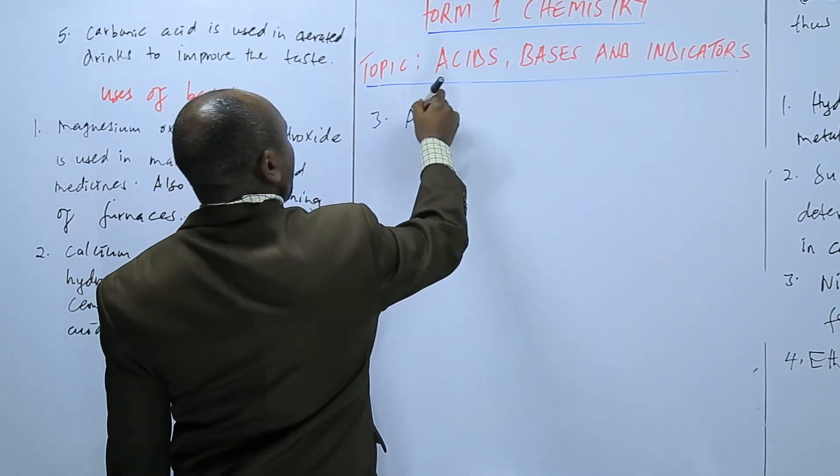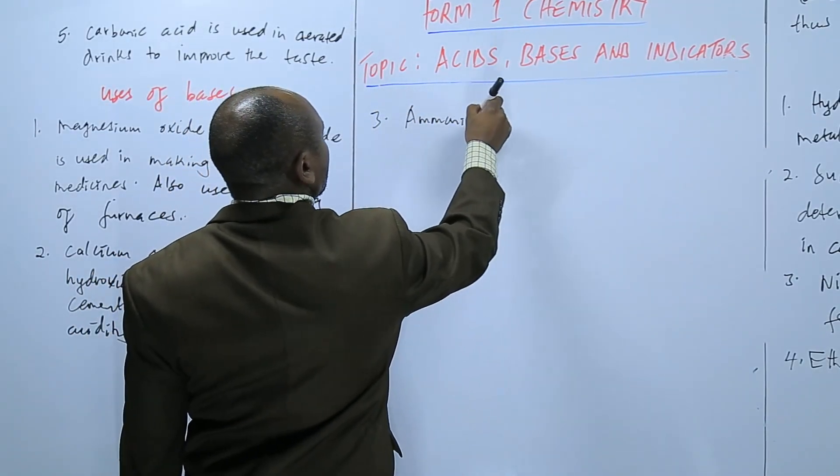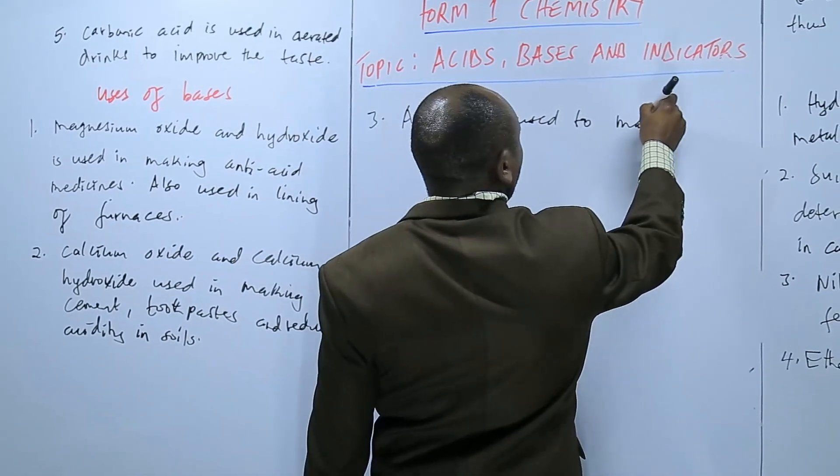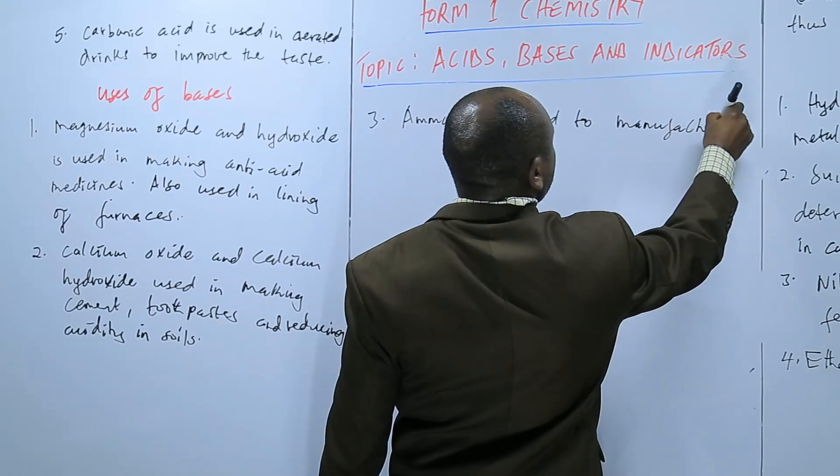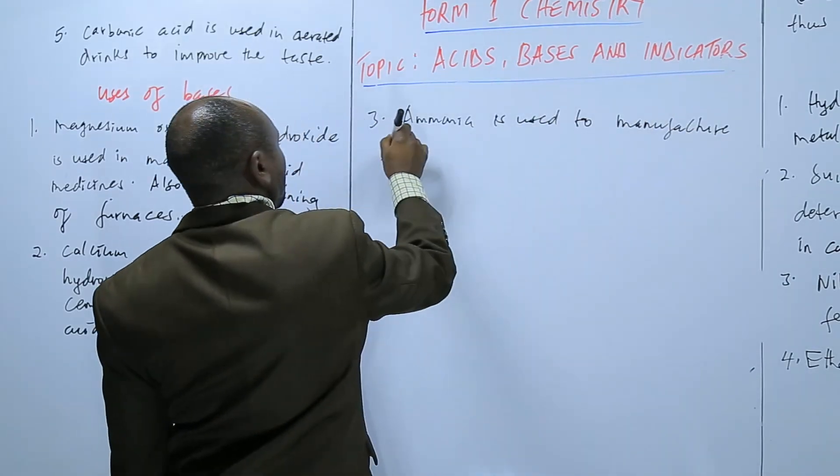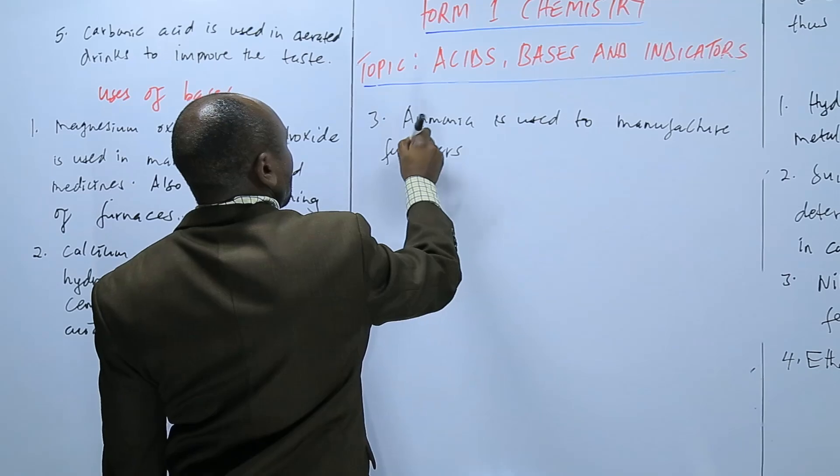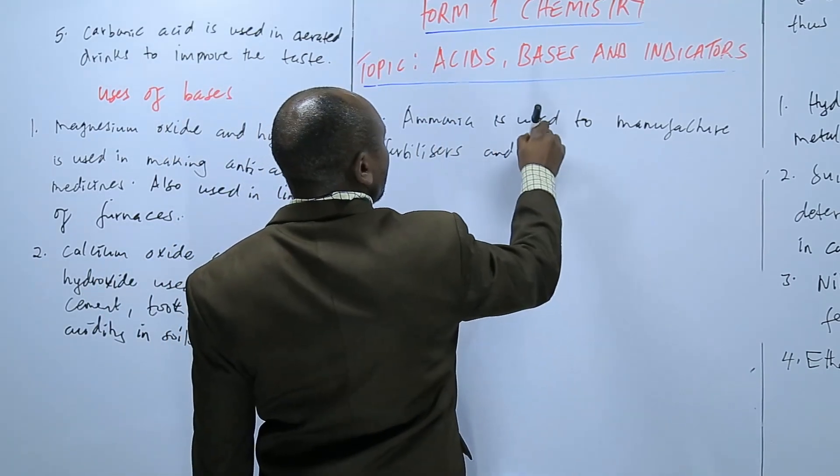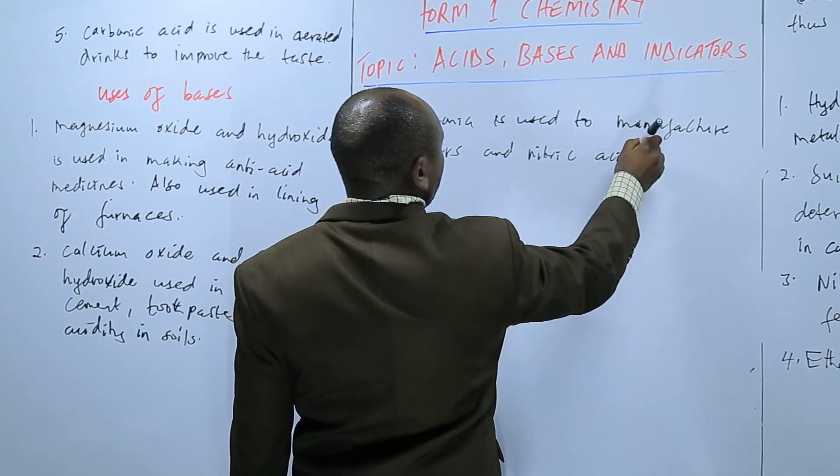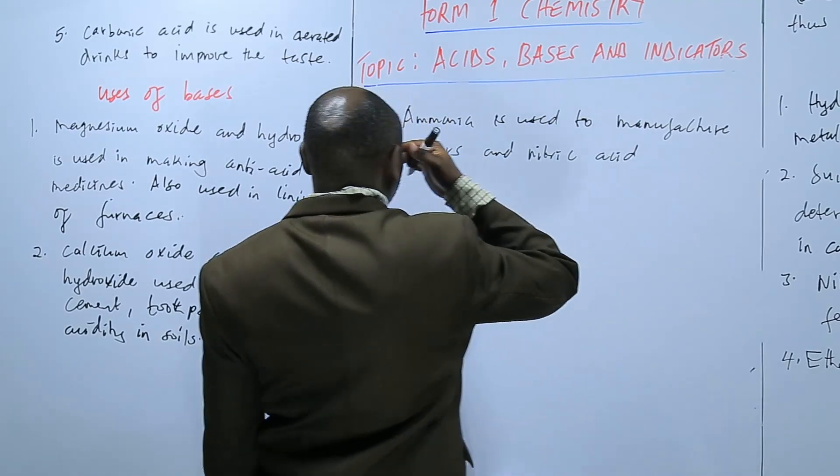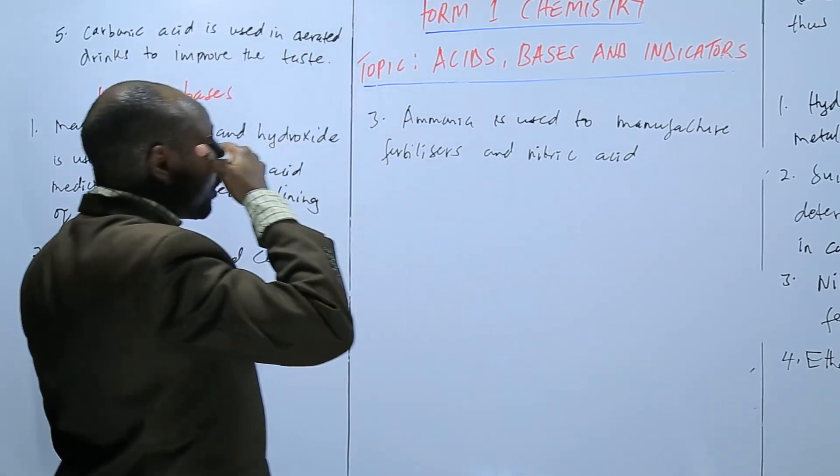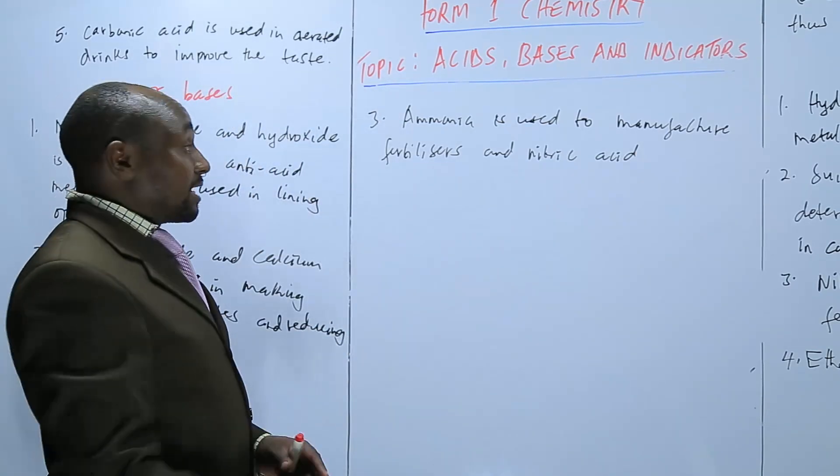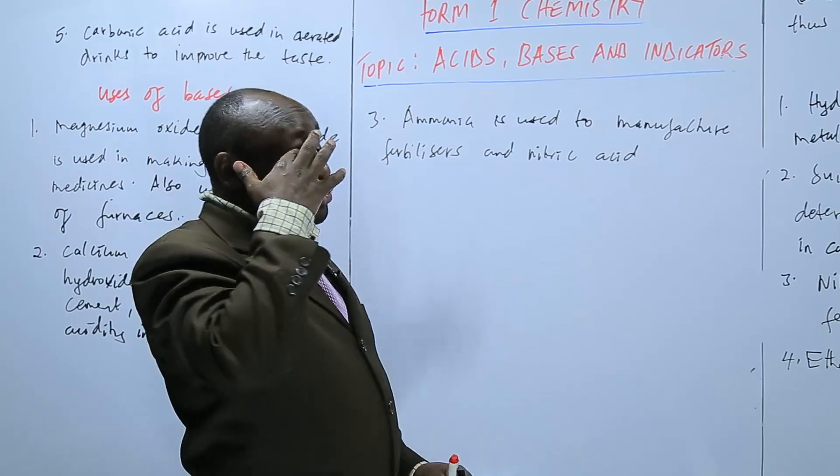We have another base, ammonia is used to manufacture fertilizers as well. Fertilizers and nitric acid. Nitric acid is made from ammonia as one of the reagents, and also ammonia is used in the making of fertilizers. The fertilizers that add nitrogen to the soil.